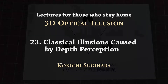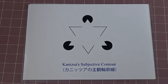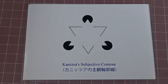Today's topic is classical optical illusions caused by depth perception. There are many classical illusion pictures. Most of them are 2D pictures, but some of them, when we see them, we perceive depth, and that is the reason why the illusion occurs. There are many examples, and I will show typical ones.